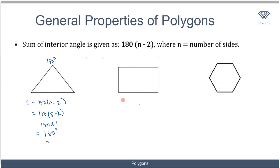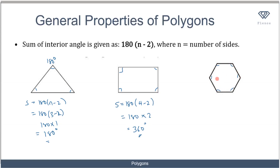For a quadrilateral, n equals 4, so the sum is 180 × (4 − 2) equals 180 × 2 equals 360 degrees, confirming what we said before. For a hexagon with six sides, the sum of interior angles is 180 × (6 − 2) equals 180 × 4 equals 720 degrees.